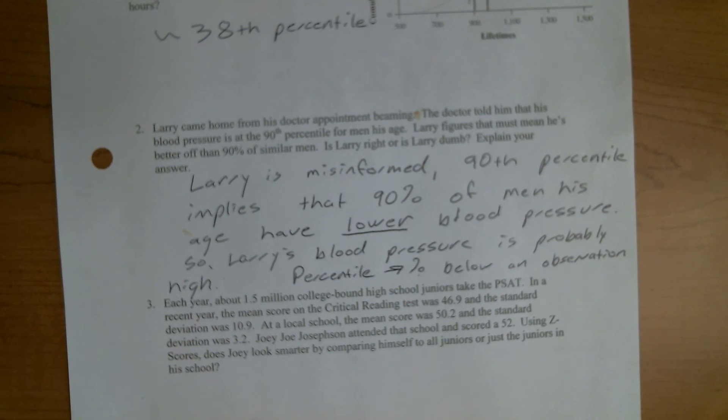Each year, about 1.5 million college bound high school juniors take the PSAT. In a recent year, the mean score on the critical reading was 46.9 with a standard deviation of 10.9. At a local school, the mean was 50.2 with a standard deviation of 3.2. So a higher mean, but also less spread out. Joey Joe Joveson attended the school and scored a 52. Using Z-scores, does Joey look smarter by comparing himself to all juniors or just juniors in his school?